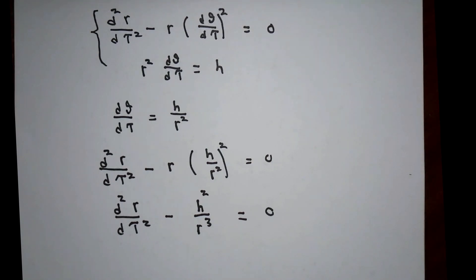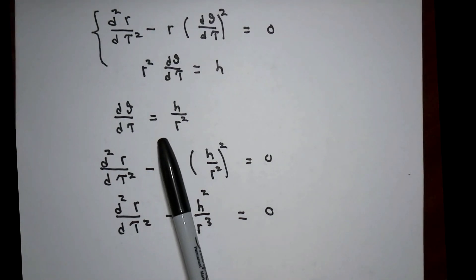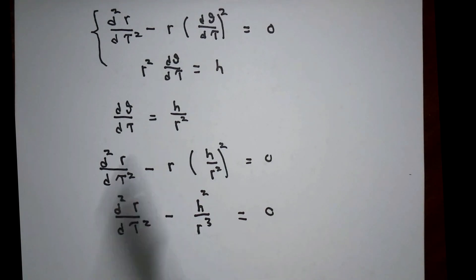Then secondly, we're going to change the independent variable to theta instead of tau by using this result in the chain rule. By doing this, we will write down an equation that relates u and theta, u again being one over r, and the parameter, the proper time, will have been eliminated from the equations.